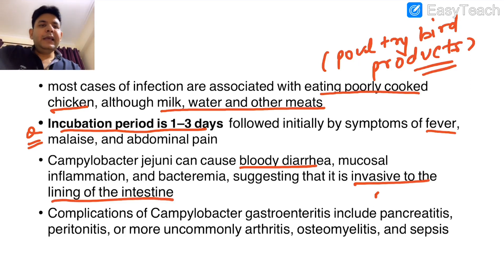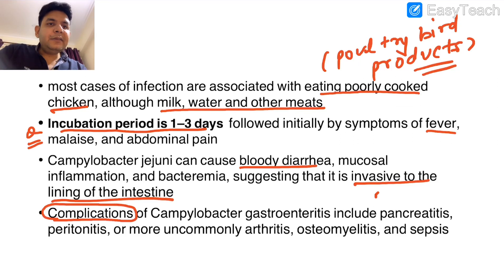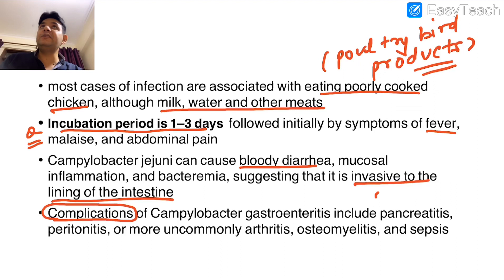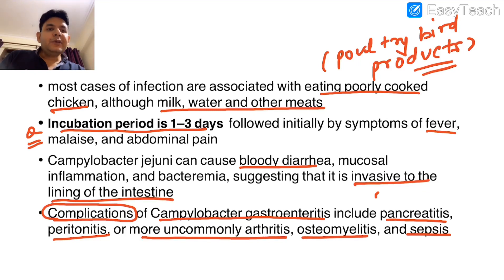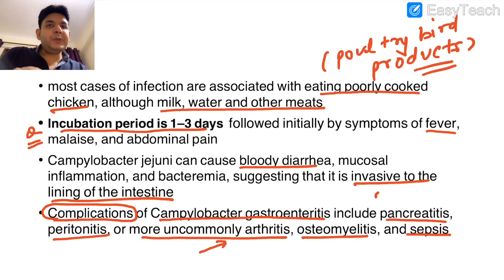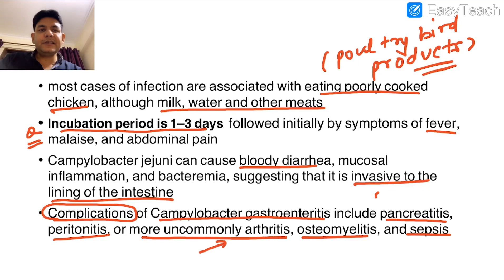In a reverse form, the question can present complications first and then give the history of eating chicken. Remember the complications of Campylobacter gastroenteritis: pancreatitis, peritonitis, and more uncommonly reactive arthritis, osteomyelitis, and sepsis. Reactive arthritis was an All India question — Shigella and Campylobacter are important causes of reactive arthritis.